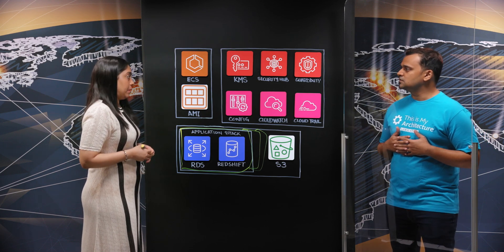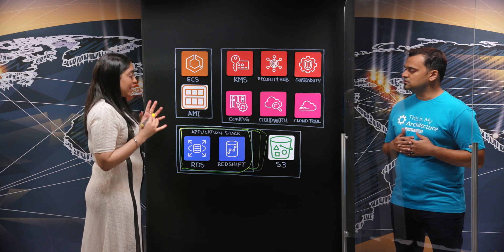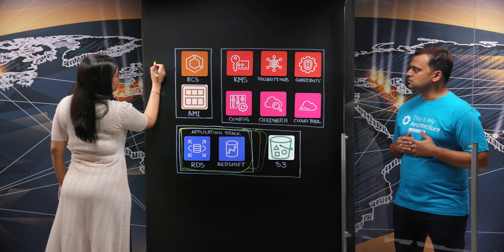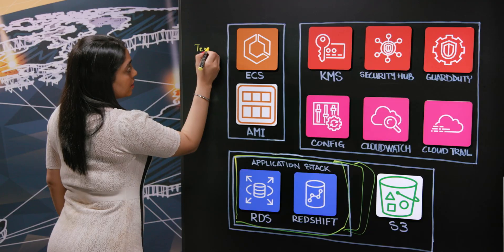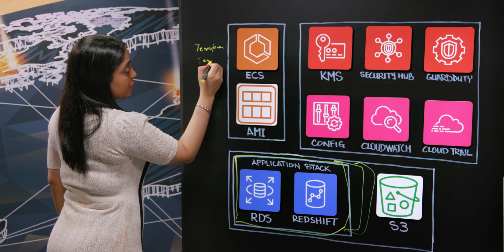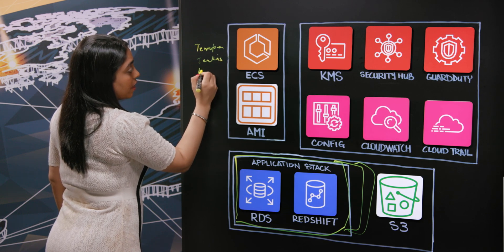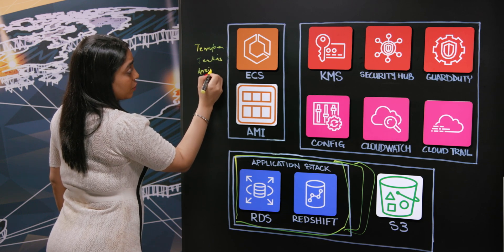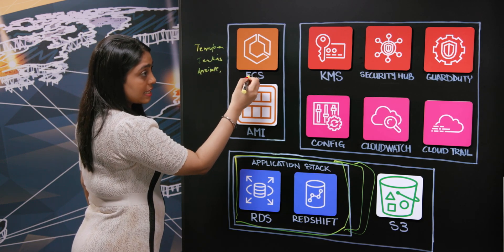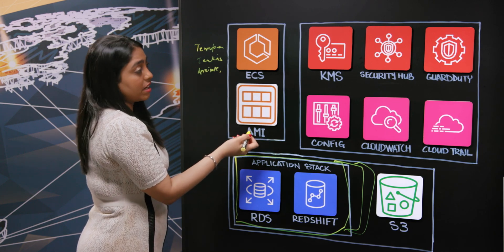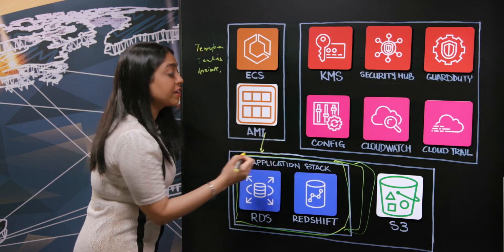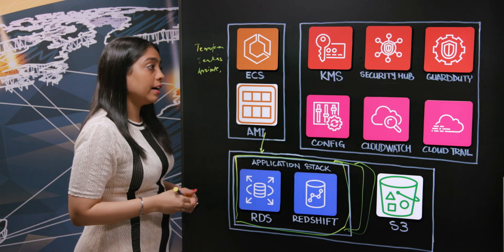Automation is key to it. We try end-to-end industry standard automation. We achieve this using Terraform for IaC, Jenkins for continuous integration, Ansible for configuration, of course Amazon ECS, and then further CIS-hardened images are built through AMI — again for every environment and every client.